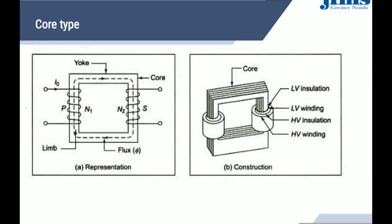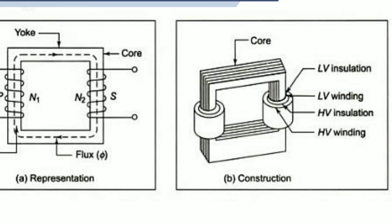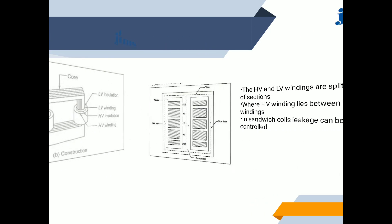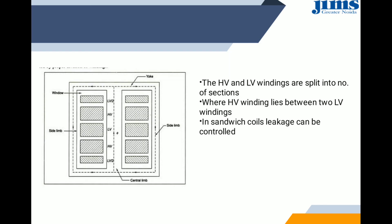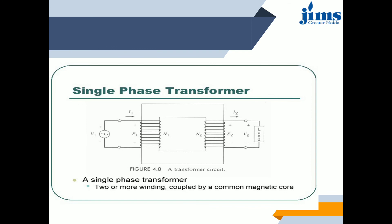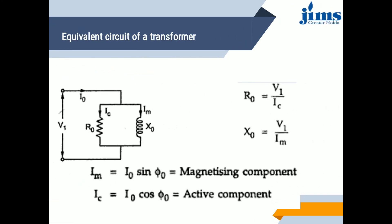The core type transformer consists of a core, yoke, primary side, limb, flux, low voltage winding insulation, low voltage winding, high voltage insulation, and high voltage winding. In the shell type, the high voltage and low voltage windings are split into a number of sections, where the high voltage winding lies between two low voltage windings, inside which coil leakage can be controlled. The single phase transformer has two windings — primary and secondary — where supply is provided to the primary winding and load is connected to the secondary winding.